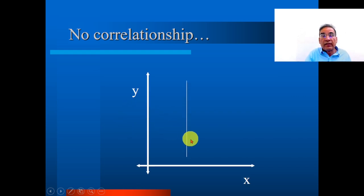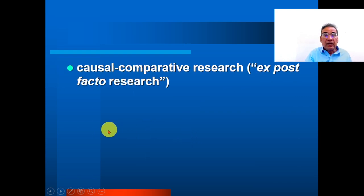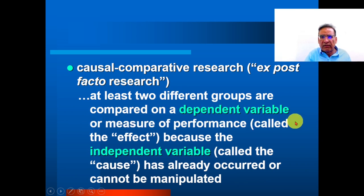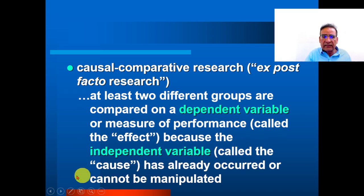Causal-comparative research is also called ex-post-facto research. At least two different groups are compared on a dependent variable or measure of performance — called the effect — because the independent variable, called the cause, has already occurred or cannot be manipulated.